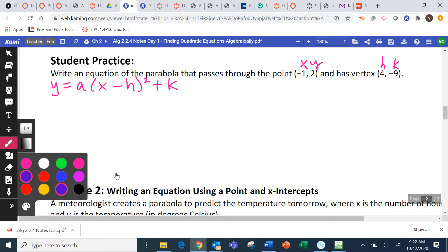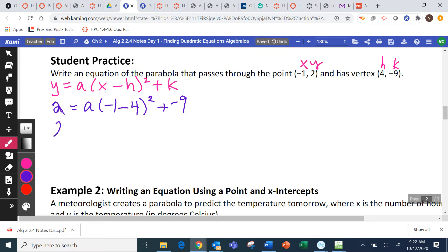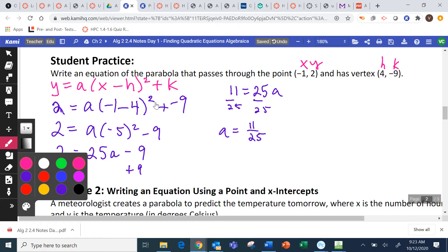So, the Y value is 2. The A value I'm trying to find. The X value is negative 1 minus the H value, 4, squared, plus the K value, negative 9. We're going to solve this for A. We're going to get 25A minus 9, so add 9. Divide by 25. And I get 11.25. So, then we write that back into the formula. Y equals 11.25, X minus 4 squared minus 9.